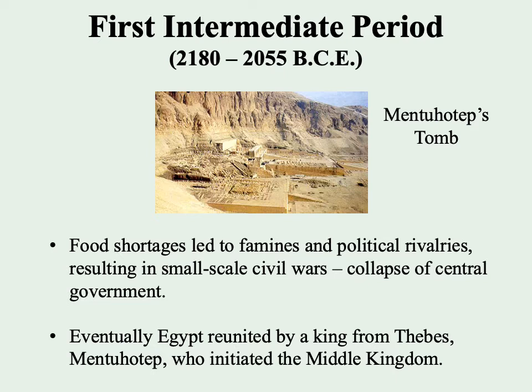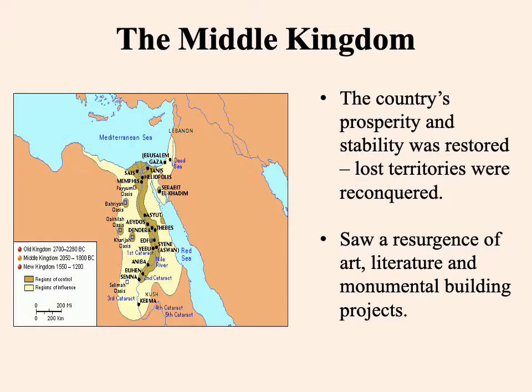From 2180 up until 2055 BCE, you have what's known as the First Intermediate Period, where things kind of fell apart. We're not entirely sure exactly what brought about the collapse — probably a host of factors. There would appear to have been food shortages leading to famines, then political strife between rival factions, resulting in small-scale civil wars, and eventually the collapse of central government. Egypt becomes politically fragmented, but eventually reunited by a king from the city of Thebes, Mentuhotep, who initiates the Middle Kingdom.